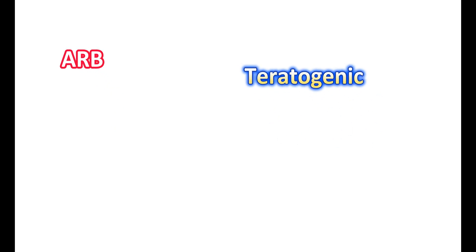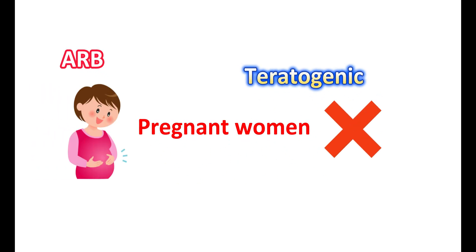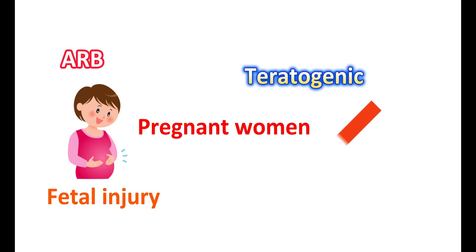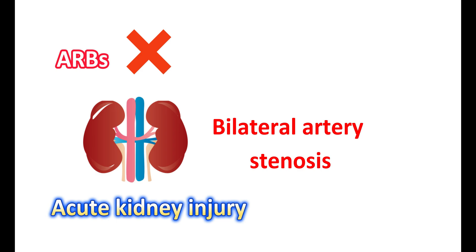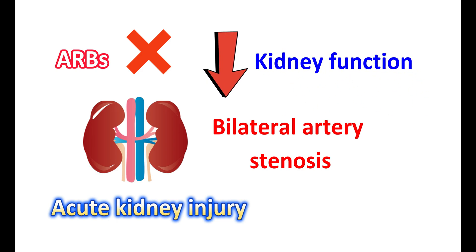ARBs are teratogenic and should not be given to pregnant women, as they can produce fatal injury or even death to the fetus. Angiotensin receptor blockers should also not be used in people with bilateral renal artery stenosis, a condition where both arteries connected to the kidneys are narrowed, leading to decreased blood flow. Using ARBs in people with bilateral renal artery stenosis may result in acute kidney injury, a sudden decline in kidney function that can lead to severe life-threatening complications.